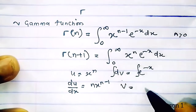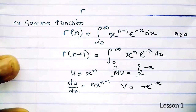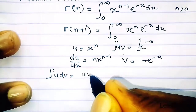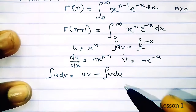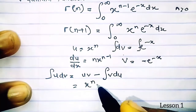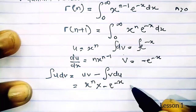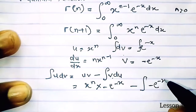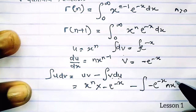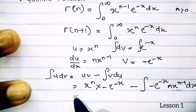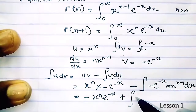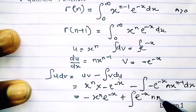Integrating dv gives v equals negative e to the minus x. Integration by parts states that the integral of u dv equals uv minus the integral of v du. Substituting: u times v gives negative x to the n times e to the minus x, minus the integral of negative e to the minus x times n x to the n minus 1 dx. Simplifying gives negative x to the n times e to the minus x, plus n times the integral of e to the minus x times x to the n minus 1.